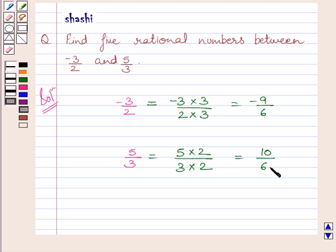Now these 2 rational numbers have same denominator. So it is very easy to find out any 5 rational numbers between them. Now these rational numbers are minus 8 upon 6, minus 7 upon 6, 0, 1 upon 6, 2 upon 6.